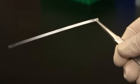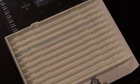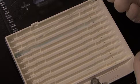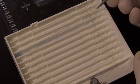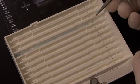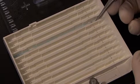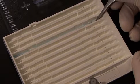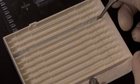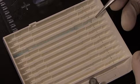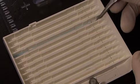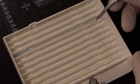To load the IPG strip into the focusing tray, place the positive end of the IPG strip into the positive electrode of the focusing tray and slowly drop your IPG strip into the lane of the focusing tray, being very careful not to trap any air bubbles. If there are any air bubbles trapped, you can pick up the end and gently reposition the IPG strip until the air bubbles are expelled.